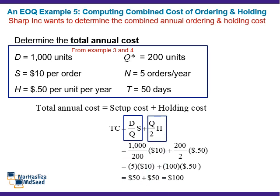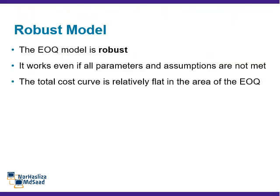The benefit of the EOQ model is that it is robust. By robust, we mean that it gives satisfactory answers even with substantial variation in its parameters. Determining accurate ordering cost and holding cost for inventory is often difficult, so a robust model is advantageous. The total cost of the EOQ changes little in the neighborhood of its minimum — the curve is flat — meaning that variation in setup cost, holding cost, demand, or even EOQ makes relatively modest differences in total cost.